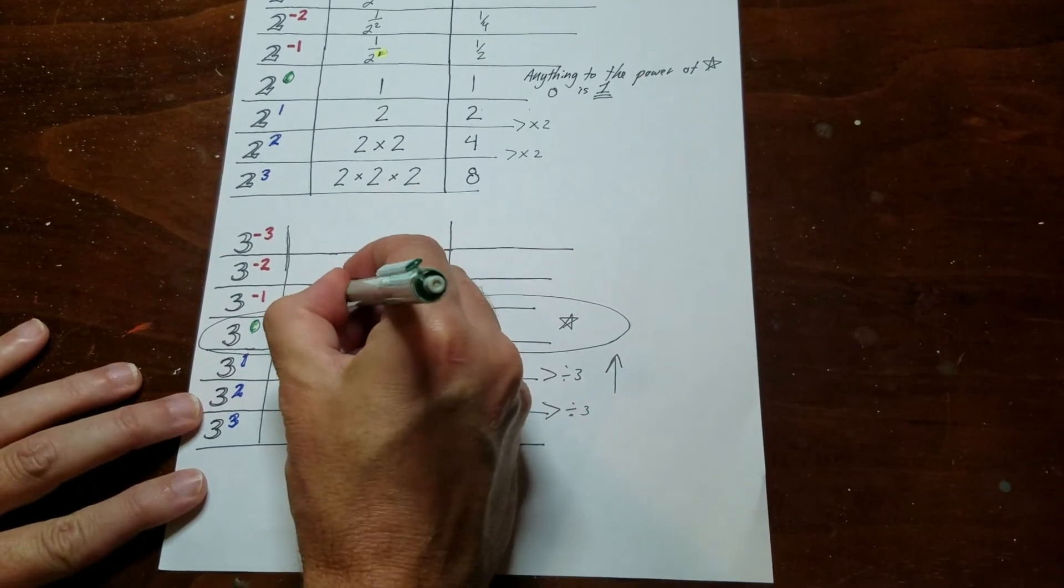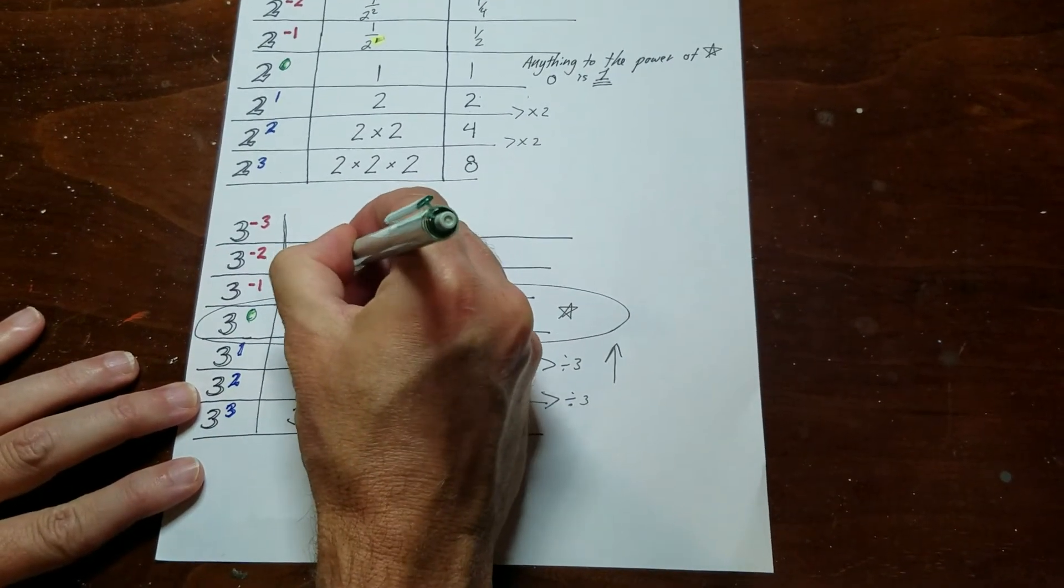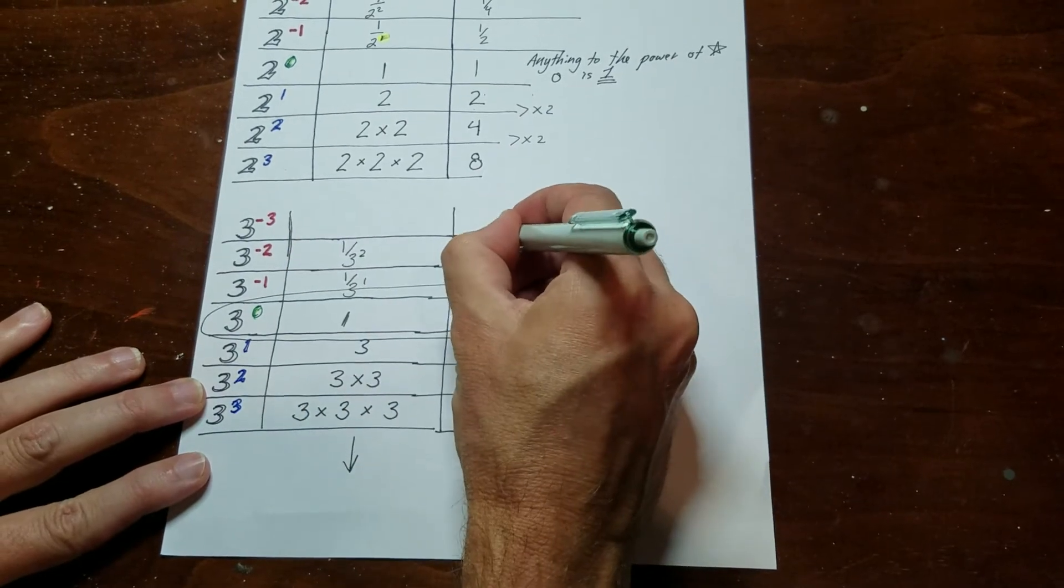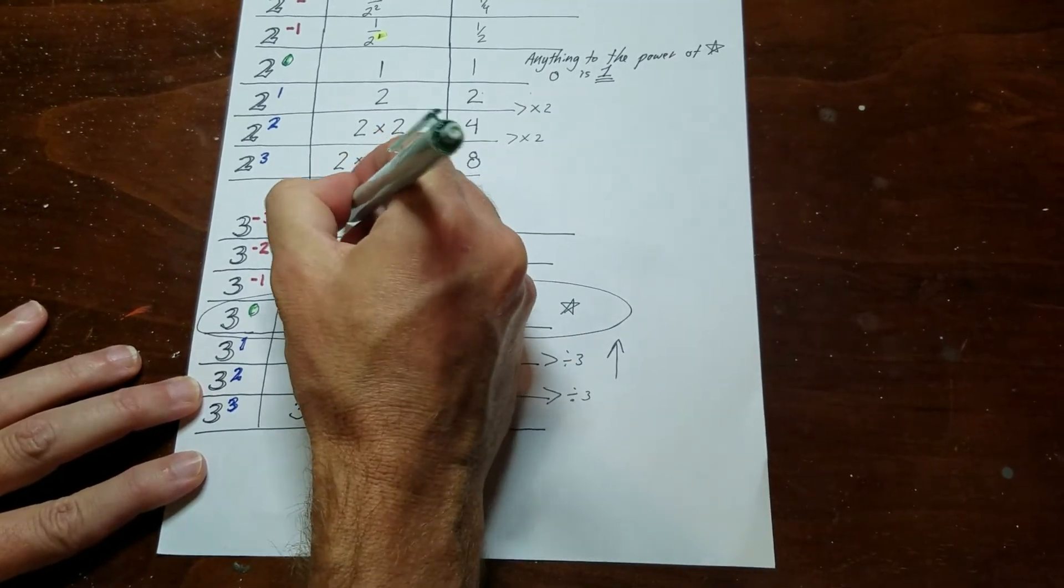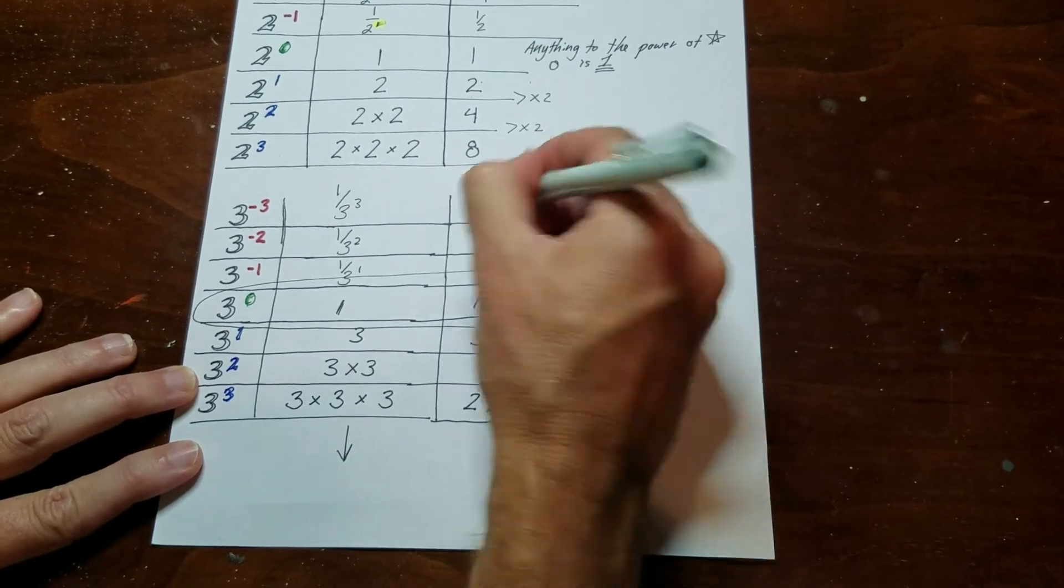And again, this would be 1 over 3 to the power of 1, which is 1 third. This is 1 over 3 to the power of 2, which is 1 over 9. This is 1 over 3 to the power of 3, which is 1 over 27.